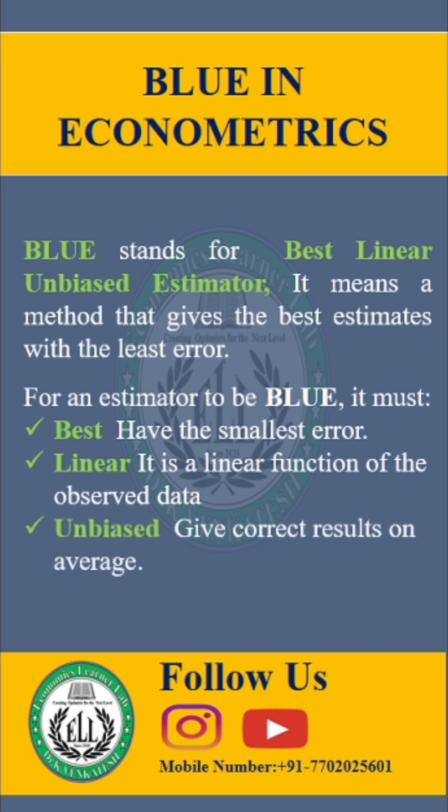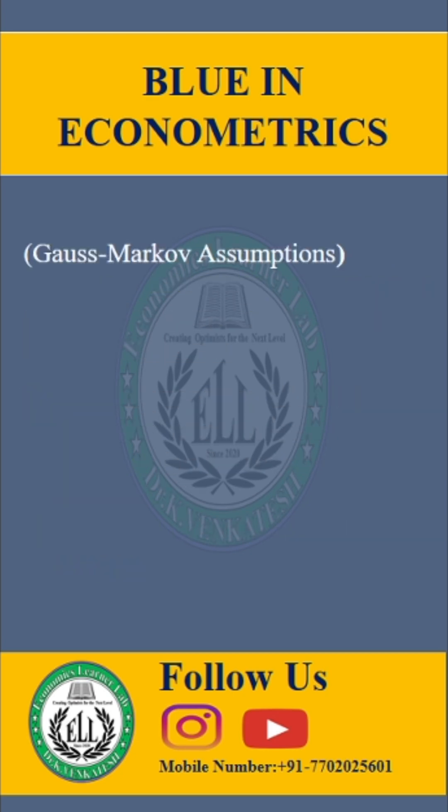The third one is unbiased — on average, it provides correct estimates. To ensure that the ordinary least squares estimates are BLUE, they must satisfy the Gauss-Markov assumptions.